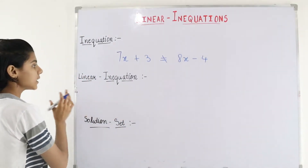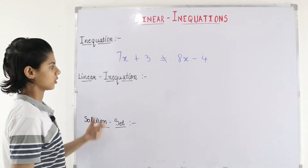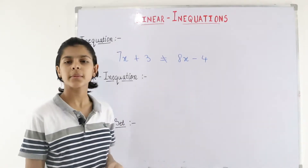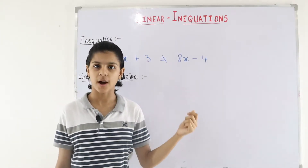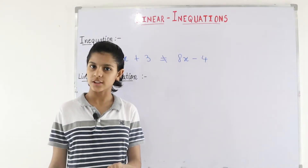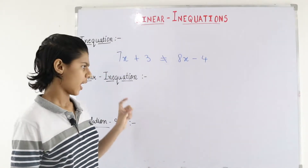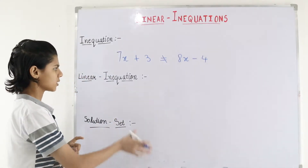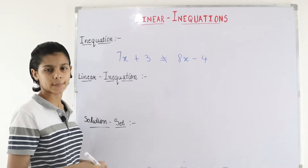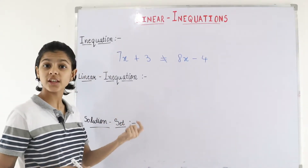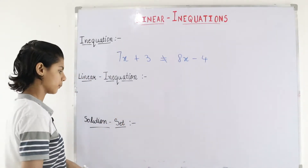Now, what is a linear inequation? Linear means that the highest power is 1, degree 1. The difference is just that in inequation it is a statement of inequality.